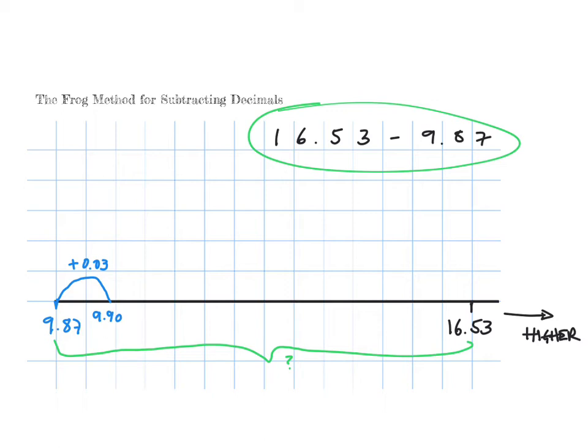Then we do a jump from 9.9 up to 10, and that's a jump of plus 0.1. So we've now reached 10, and 10 is quite good because that's a good starting point - it's like a round number.